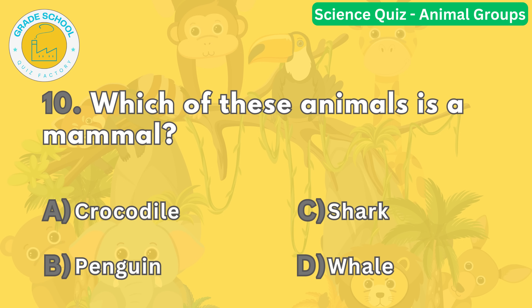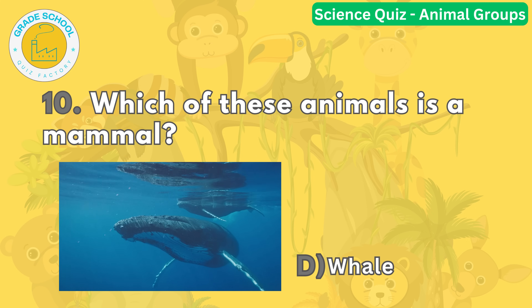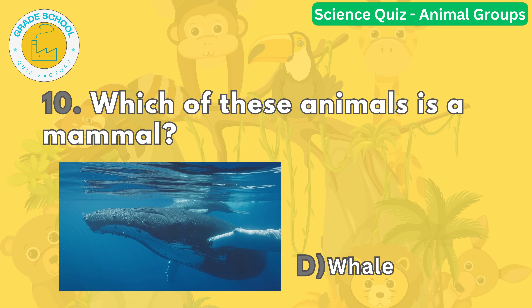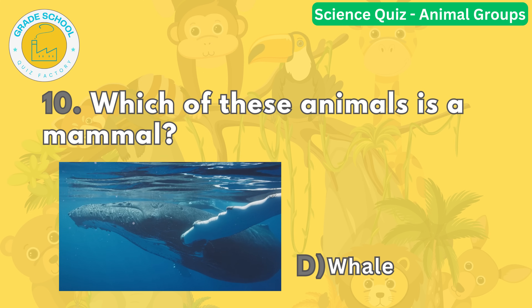Lastly, which of these animals is a mammal? The correct answer is letter D, whale. Mammals are vertebrates that have hair or fur, feed milk to their young, and breathe with lungs. Whales are mammals that live in water and have a thick layer of blubber to keep them warm.